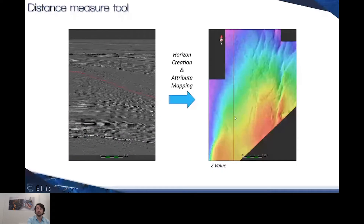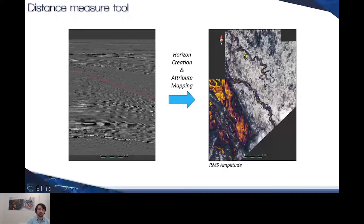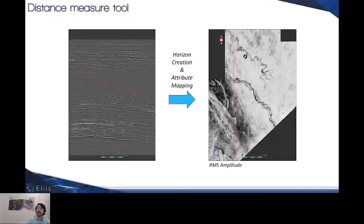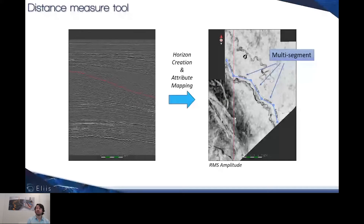New improvements concern the measure tool. Starting from the analysis of the map and its topography, we can switch between the z-value and attributes in order to compare topography and amplitude anomalies. Based on those anomalies we can change the color scale. We can now draw a measure tool that is drastically different from the previous one because it is composed of a multitude of segments — the behavior is extremely similar to an open polyline or the creation of an arbitrary line. Each segment collects the distance between each apex of this measurement tool.